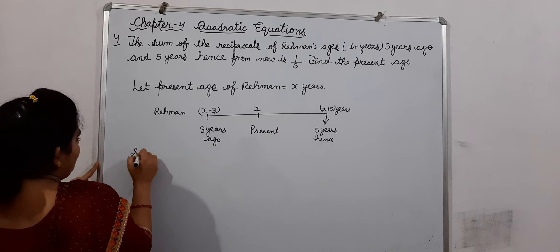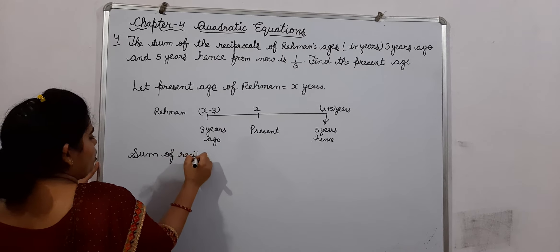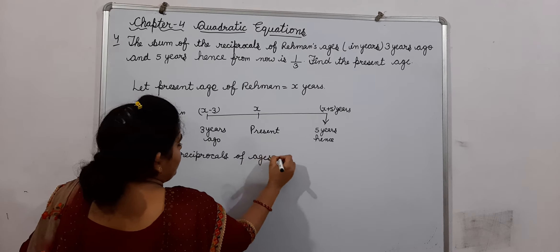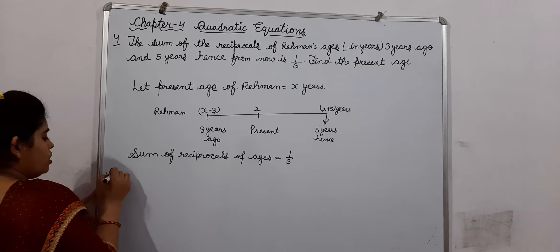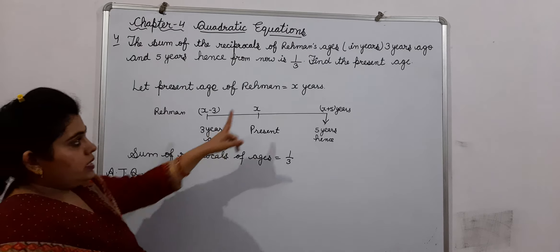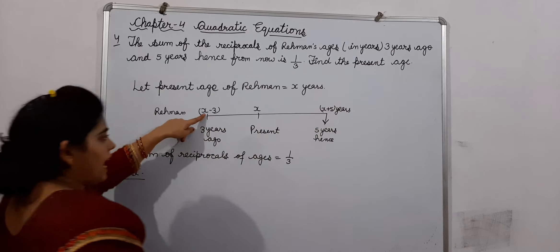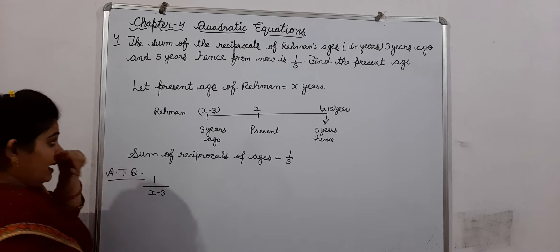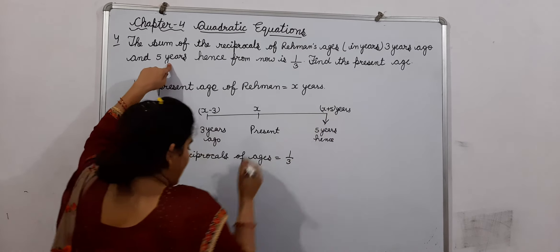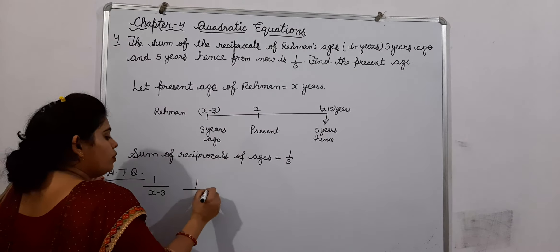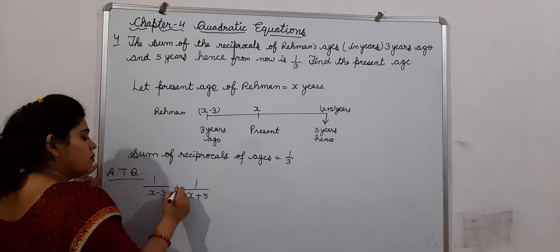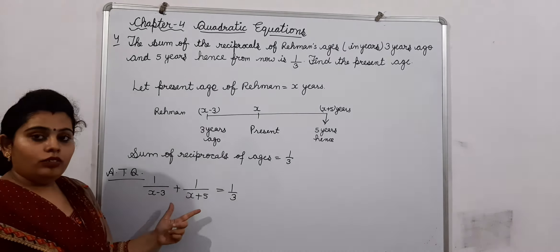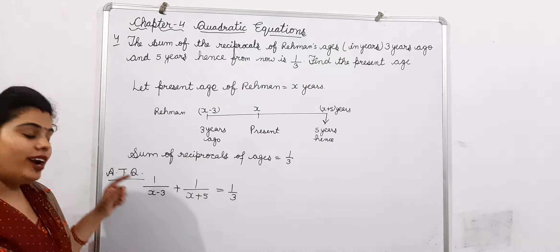The sum of the reciprocals of his ages is 1 by 3 — this is given. So according to the question, his age 3 years ago was X minus 3, and its reciprocal is 1 upon X minus 3. And 5 years hence, his age will be X plus 5, and its reciprocal will be 1 upon X plus 5. The sum of these two is equal to 1 by 3. From here, we will prepare a quadratic equation.